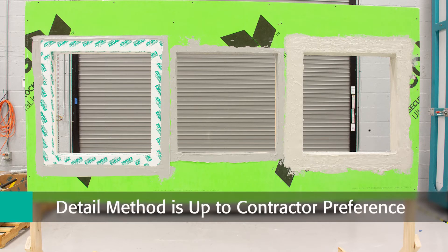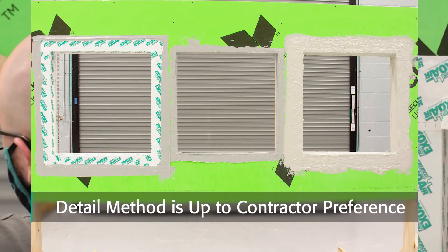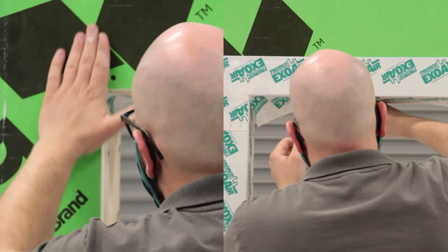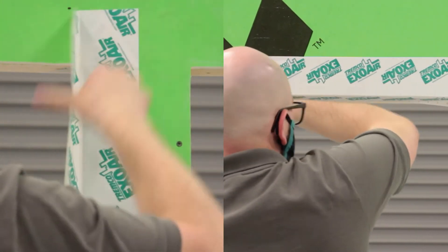Each route to detailing is equally effective and up to contractor preference. In this video, we will walk through how to apply the ExoAir 110AT Peel and Stick Membrane at the rough openings.